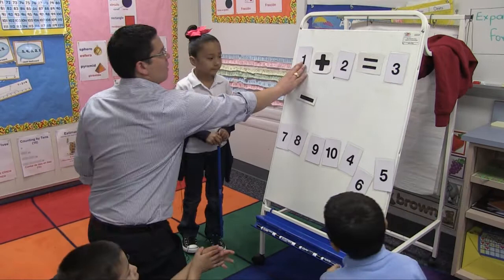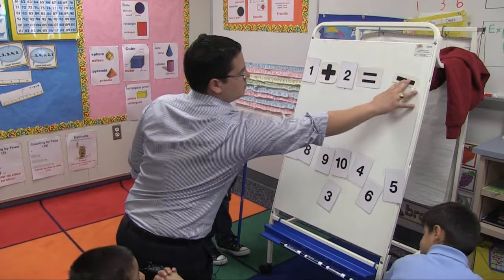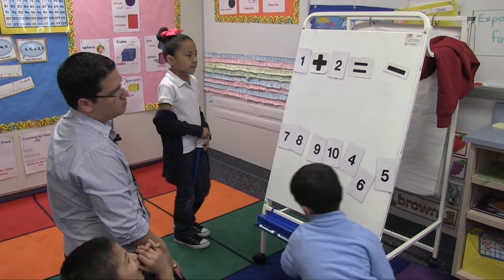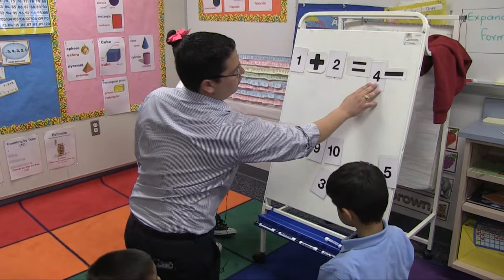One plus two equals three. Are you agree with her? Yes. That's correct. Now, can I make a subtraction sentence with the same answer? What do you think, Manuel — could be an option? Four minus one. Let's try. So Manuel says four minus one.